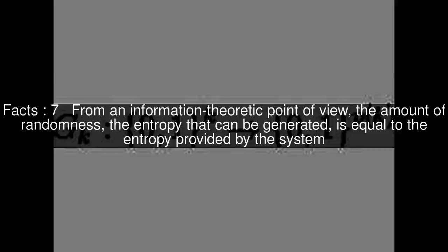From an information-theoretic point of view, the amount of randomness — the entropy that can be generated — is equal to the entropy provided by the system. But sometimes, in practical situations, more random numbers are needed than there is entropy available. Also, the processes to extract randomness from a running system are slow in actual practice.